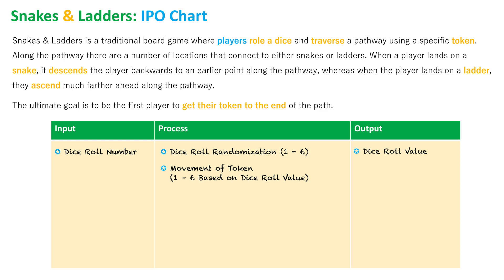The dice roll value is important because it determines how many spaces your piece is going to move. That output leads to the next process: the token will be moved based on whatever that dice roll value is. So if you roll a three, your token moves three spaces forward. If using two dice the randomization would be between one and twelve, but in this case we'll stick to one to six. The output of this process is the actual movement of the token.